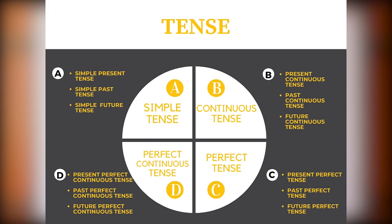Group C, perfect tense: present perfect, past perfect, and future perfect. And the last group, Group D, is perfect continuous tense.